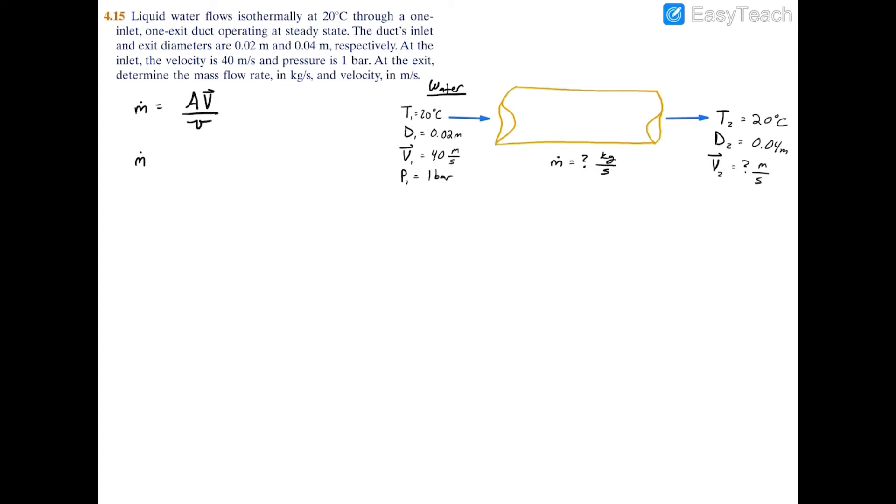We have m dot equals the area first, and the area, if you remember, is pi d squared over 4 because we have a cylinder here. Then we have the velocity, which is given as 40 meters per second, and we divide it by the specific volume.